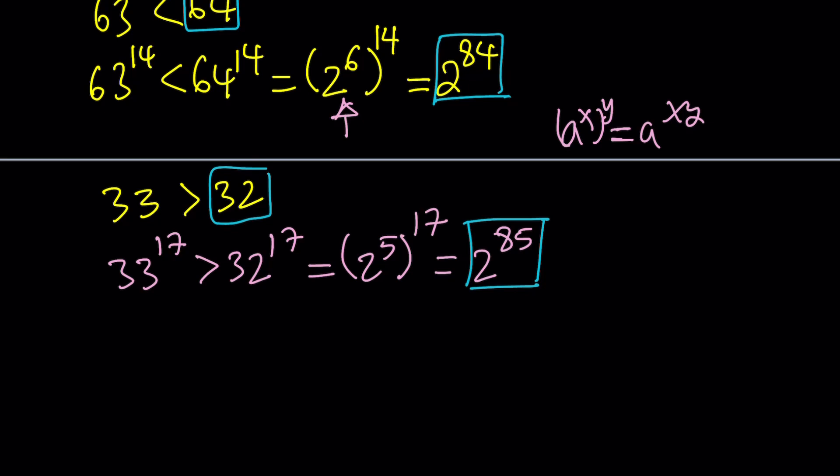Now, we're going to go ahead and put it together. Using the fact that, obviously, 2 to the power 84 is less than 2 to the power 85. Make sense? Okay.